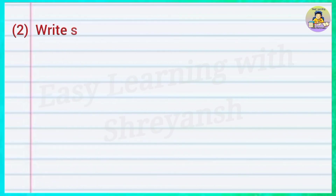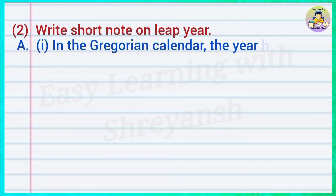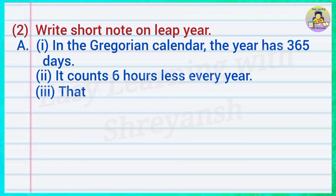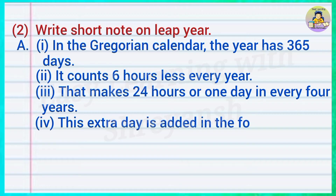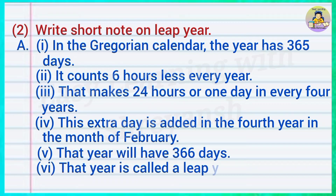Two — write a short note on leap year. Answer: In the Gregorian calendar the year has 365 days. It counts six hours less every year; that makes 24 hours or one day in every four years. This extra day is added in the fourth year in the month of February. That year will have 366 days and is called a leap year.